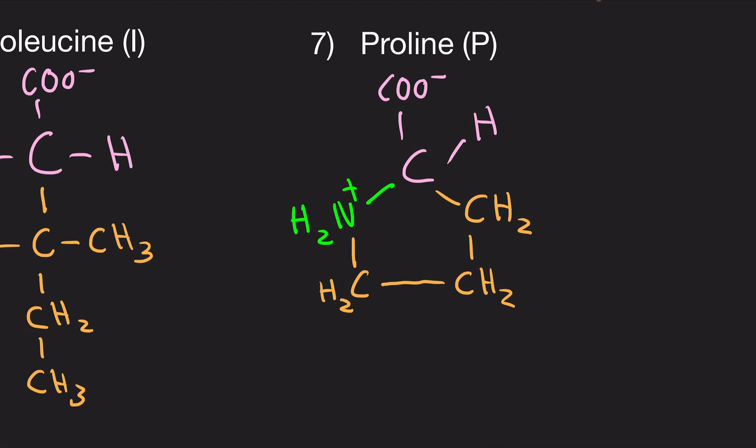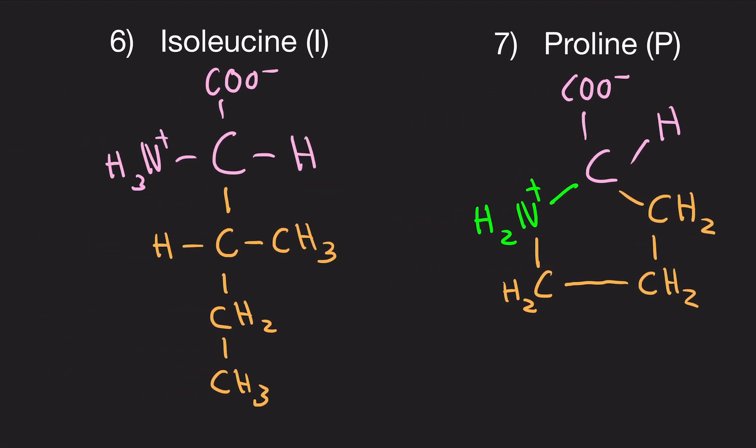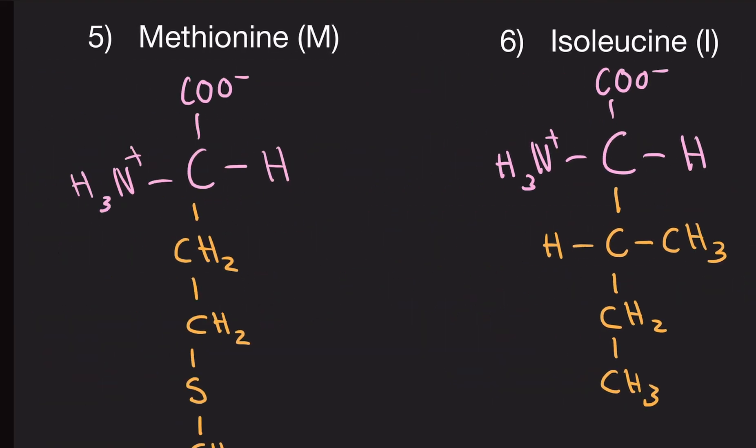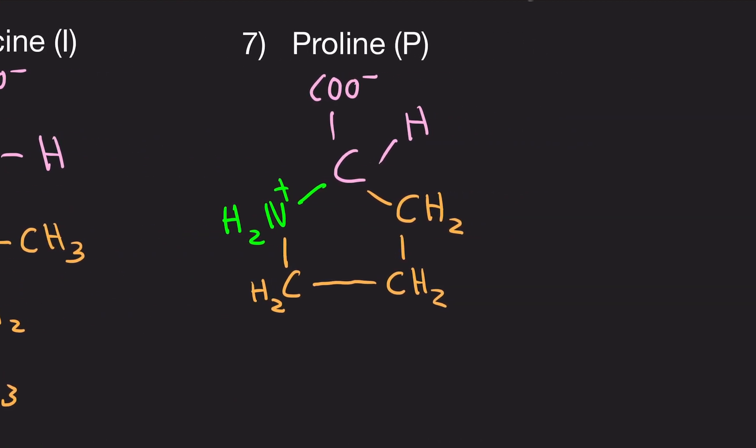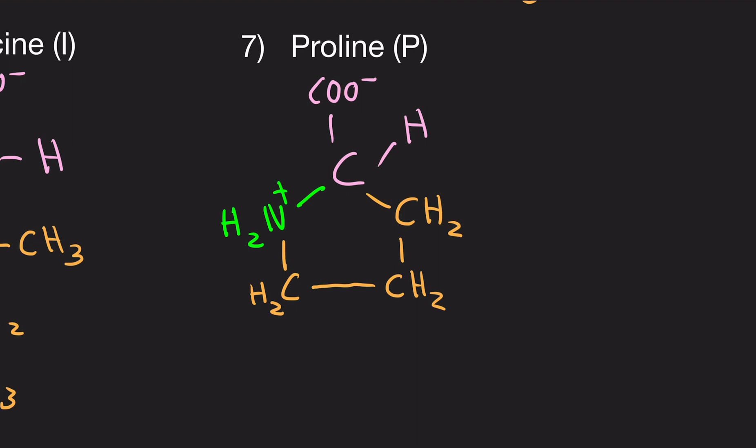And notice here, we have an NH2, not an NH3 like everything else. This is an NH2. Proline has a ring-like structure. And all it is is, you know, CH2, CH2, CH2, and with a special NH2 here. That's it. And it's in a ring. That's proline.